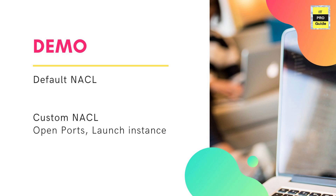Let's move to the demo session. We're going to work on the default network ACL first, then create a custom network ACL. Then we're going to create some rules for an instance to access RDP on port 3389. An RDP port alone is not enough to access an instance — you also need to add ephemeral ports, which will be explained in the demonstration. We'll see how to spin up an instance and access it with RDP after associating a custom network ACL.